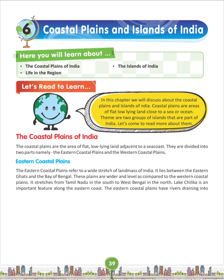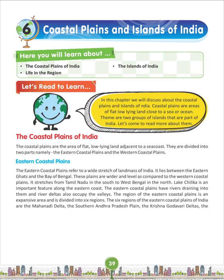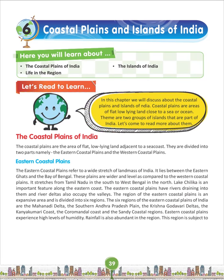The eastern coastal plains have rivers draining into them, and river deltas also occupy the valley. The region is expansive and is divided into six regions: the Mahanadi delta, the southern Andhra Pradesh plain, the Krishna Godavari delta, the Kanyakumari coast, the Coromandel coast, and the sandy coastal regions. Eastern coastal plains experience high levels of humidity.